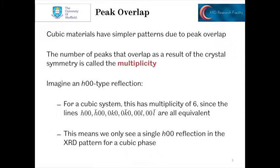If we imagine an H00 type reflection, for a cubic system this is going to have a multiplicity of 6. The H00, -H00, 0K0, 0-K0, 00L, and 00-L lines are all equivalent. They all overlap. And so when we look at a cubic phase with XRD, we only see a single H00 reflection.